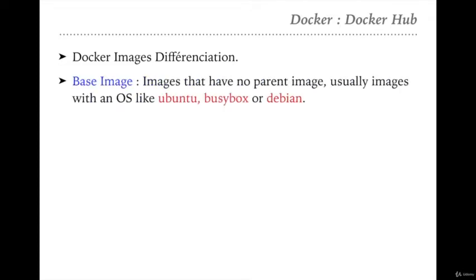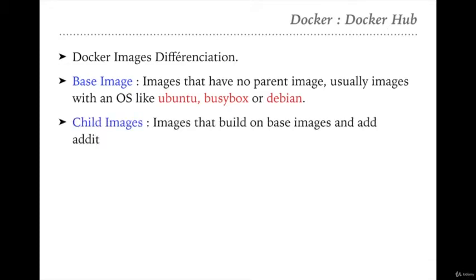First, let's discuss Docker image differentiation. A base image is one that has no parent image - typically operating system images like Ubuntu, BusyBox, and Debian. These are large in size. A child image is built on top of a base image and provides additional functionality - for example, an image using Ubuntu as its base but adding its own CLI or interactive features. These are called child images.